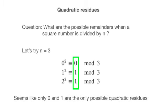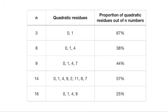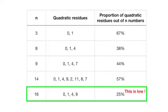For modulo 3, it is clear that we can only have 0 and 1 as quadratic residues, and the same holds for modulo 4. You'll notice that some numbers seem to have a higher proportion of quadratic residues than others. A particularly striking example is 16. Out of the 16 possible numbers, only 0, 1, 4, and 9 are quadratic residues.